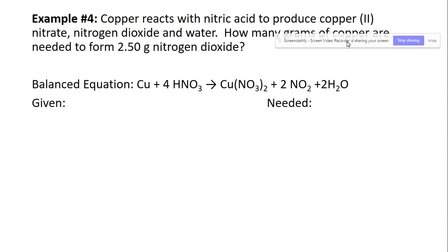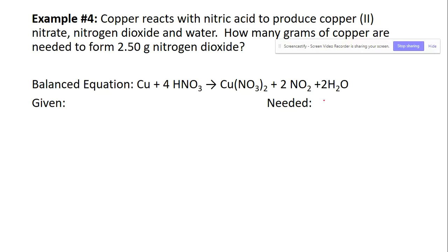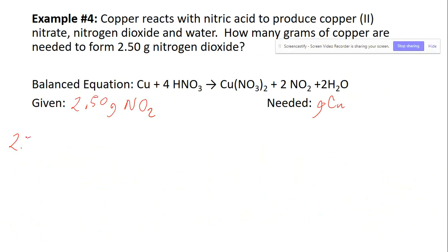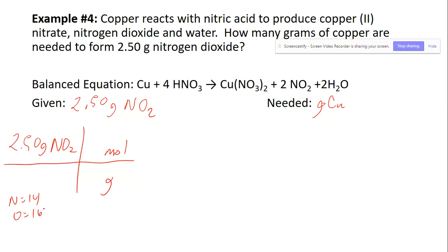Example four: copper reacts with nitric acid to form copper nitrate, nitrogen dioxide, and water. How many grams of copper are needed for 2.50 grams of nitrogen dioxide? Grams to grams means we need the periodic table twice and the balanced equation once. For NO₂, nitrogen is 14 and oxygen is 16 times 2, giving 46 grams per one mole.